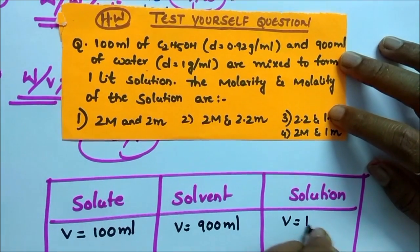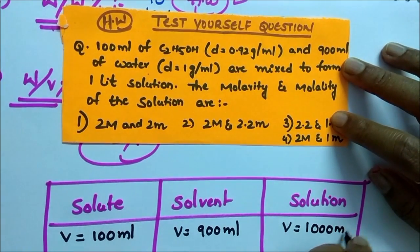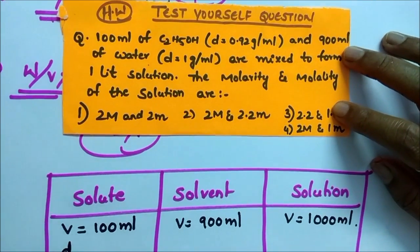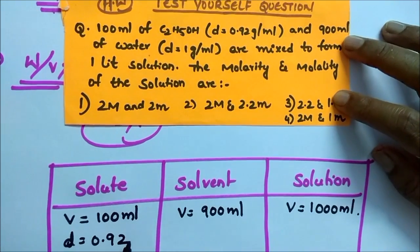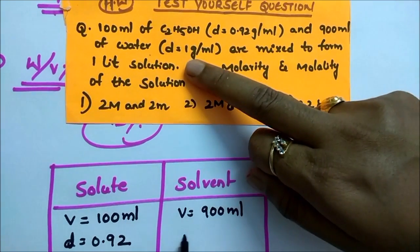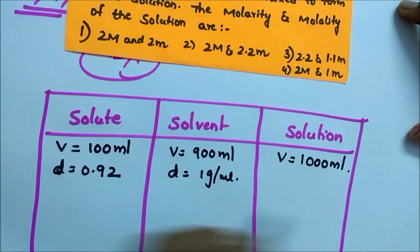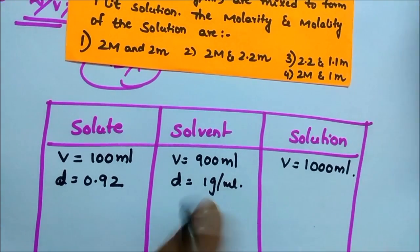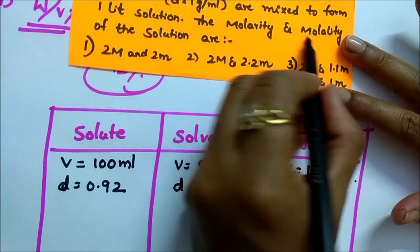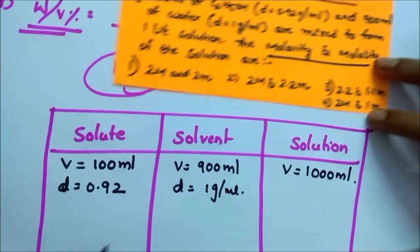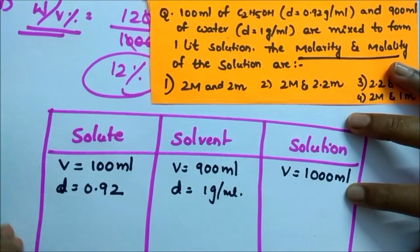Density of solute 0.92, solvent density is 1 gram per ml. That's it, you have to calculate molarity and molality. First, convert this into mass.